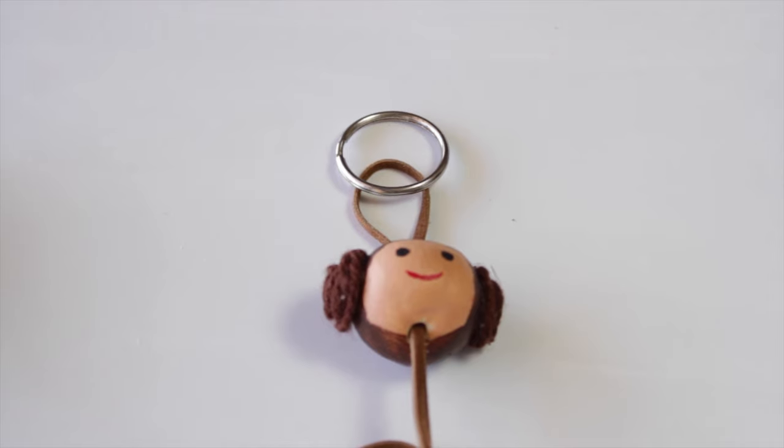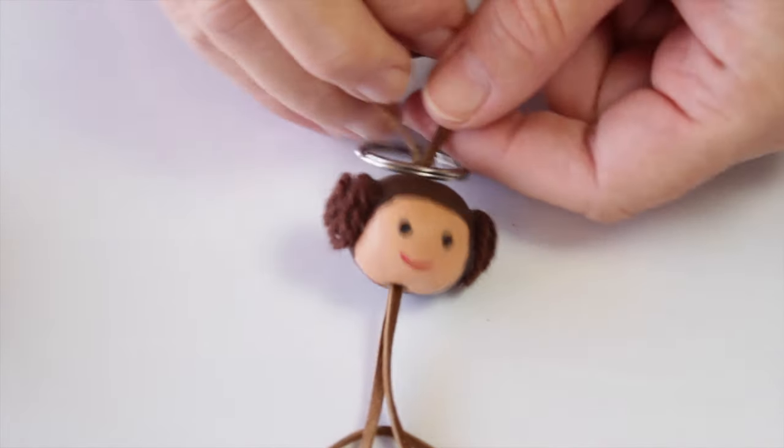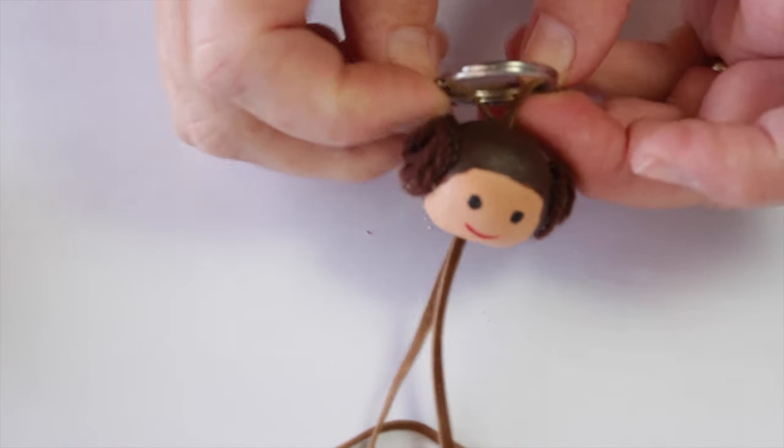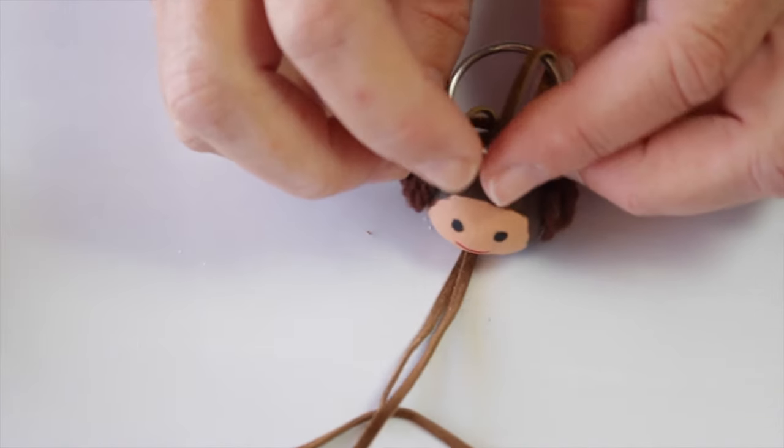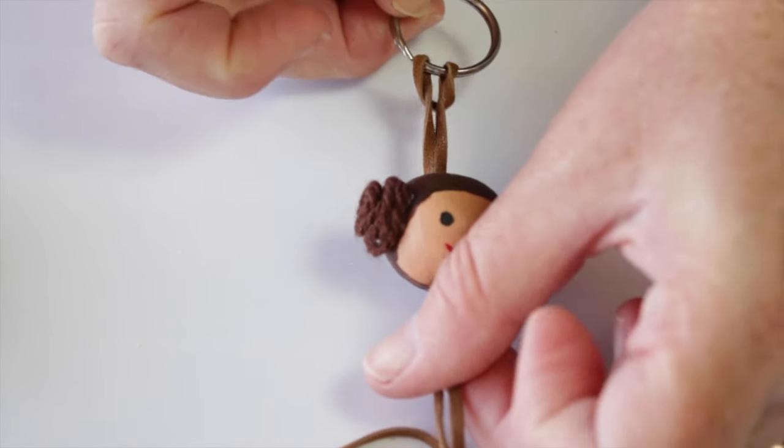Place the keyring over the loop. Pull the loop through the ring and then around the ring. Pull the leather cord tight to make a knot.